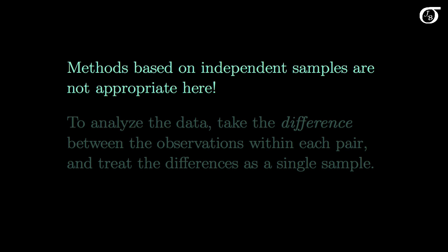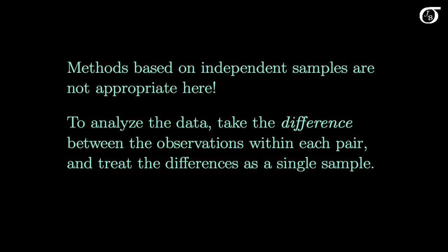How do we analyze this type of data? The first point to note is that methods based on independent samples are not appropriate here, so it would not be appropriate to use something like the pooled variance t procedure. To analyze this type of data, we take the difference between the observations within each pair and treat the differences as a single sample.